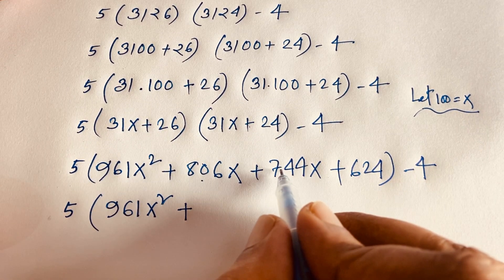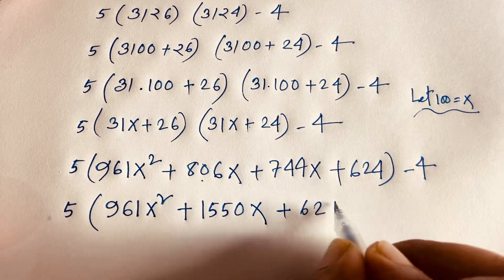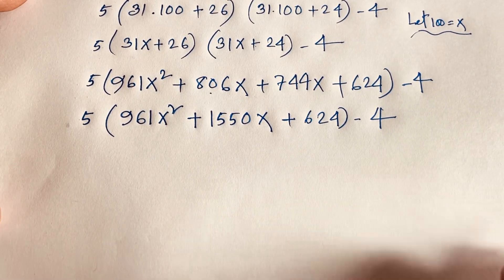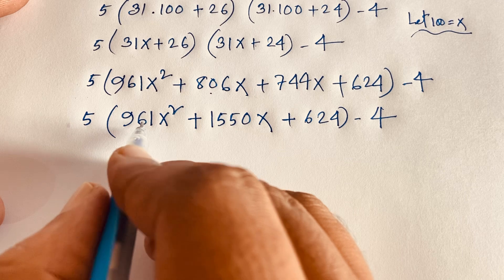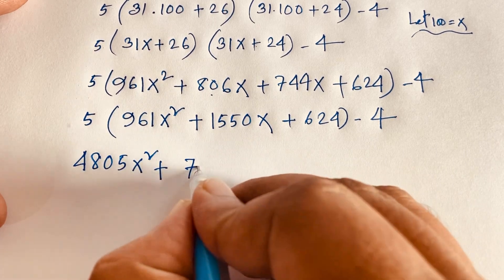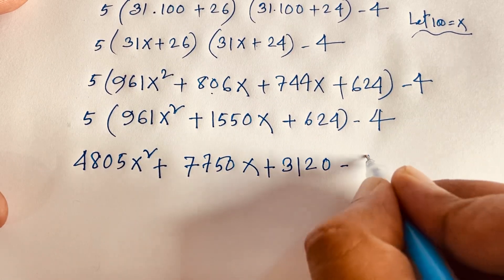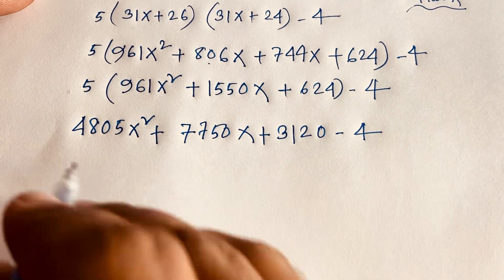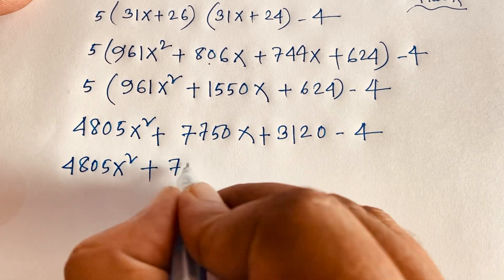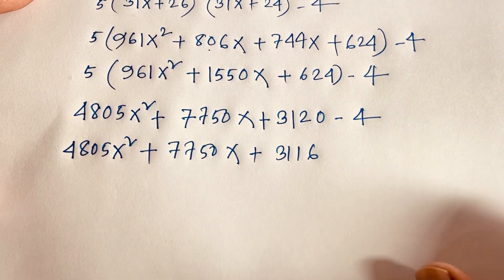Continuing the expansion: 5 times 961x squared equals 4805x squared, and 5 times 1550x gives 7750x, and 5 times 624 gives 3120, minus 4. So the expression becomes 4805x squared plus 7750x plus 3116. Recall that x equals 100.